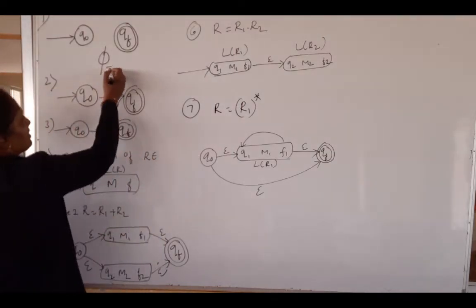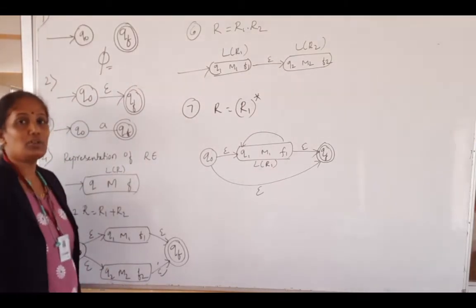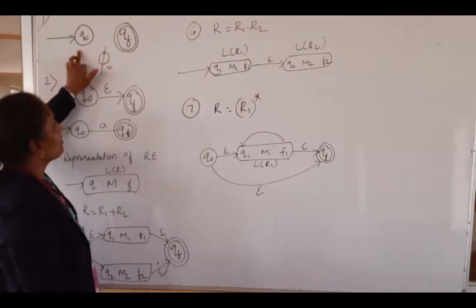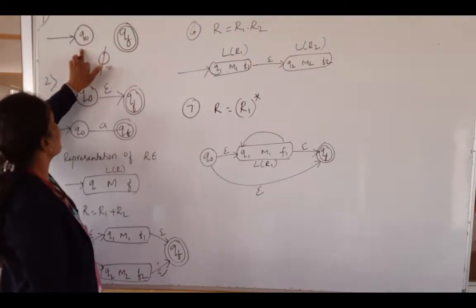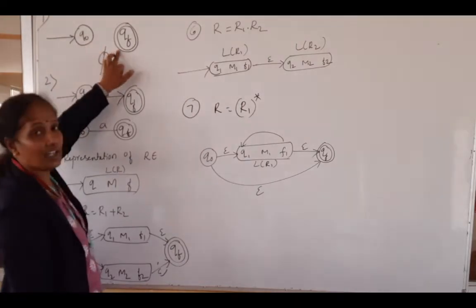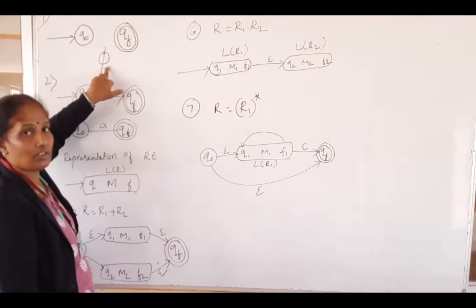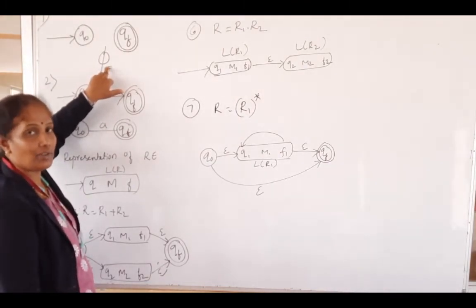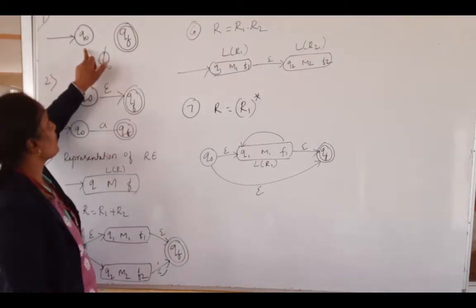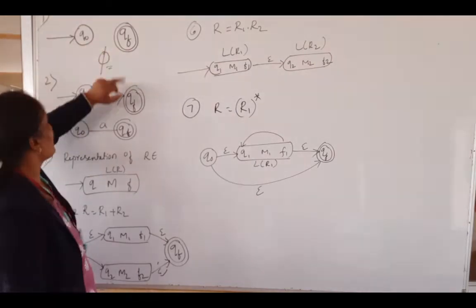The first case represents null. Null indicates it is not contributing anything to the language. It is represented by two states q0 and qf, where q0 is the start state and qf is the final state. There is no transition shown between these two states because null does not contribute any strings to the language.